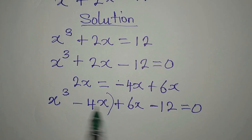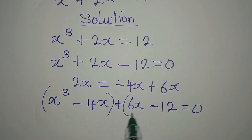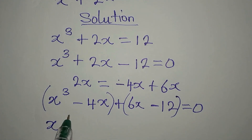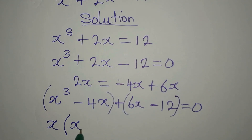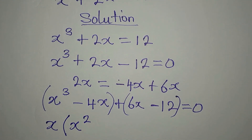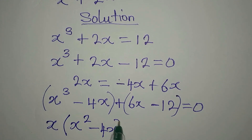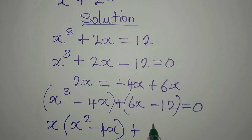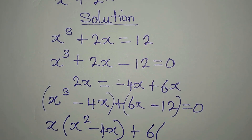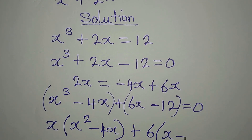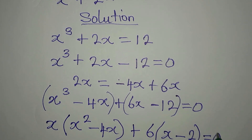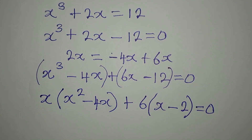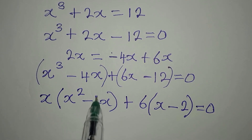We group into two parts and factorize. x is common in the first group, giving x(x² minus 4x). Then 6 is common in the second group, giving 6(x minus 2), since 6 into 12 is 2. We equate to 0, and note that the 4 is because x is already factored out.